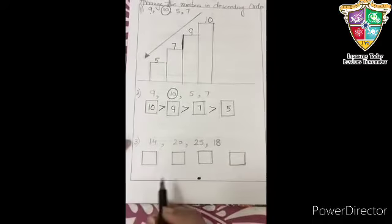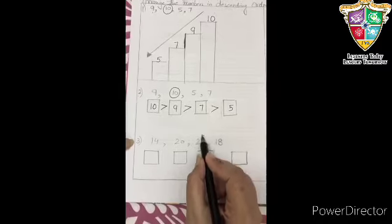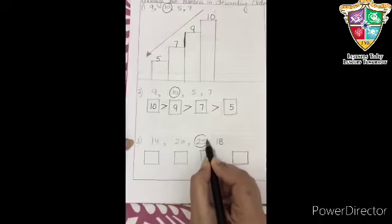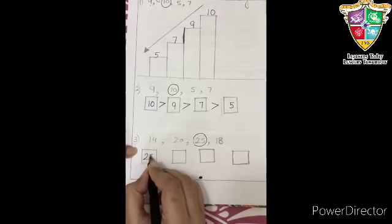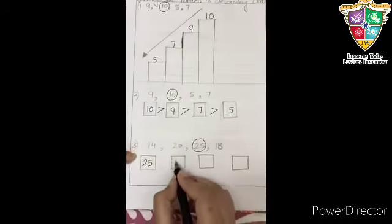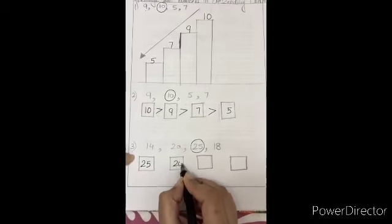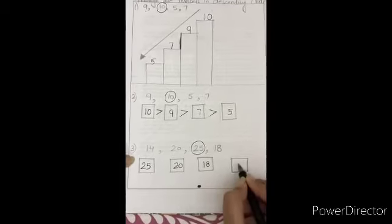Now, the second sum. One more sum. In this, the biggest number is? Yes, right. 25. First of all, we write the 25 in the first box. Then the next one is 20. Then 18. Then 14.